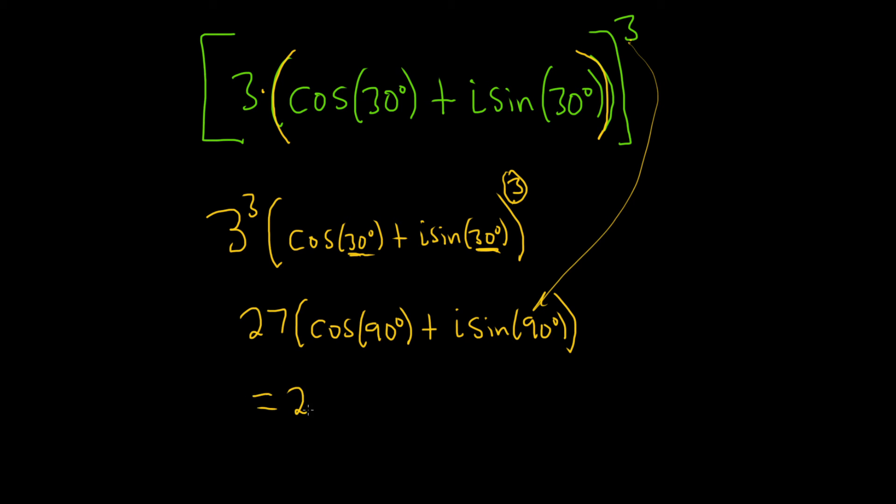So what is the cosine of 90, let's think. So on the unit circle, this is 90 degrees. And every ordered pair is of the form cosine theta, comma, sine theta. So we're here. So at this ordered pair, the ordered pair would be 0, comma, 1.